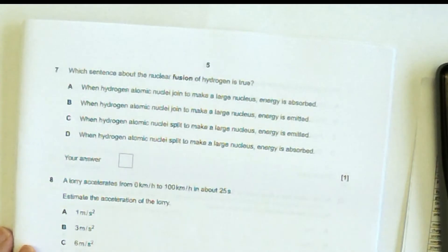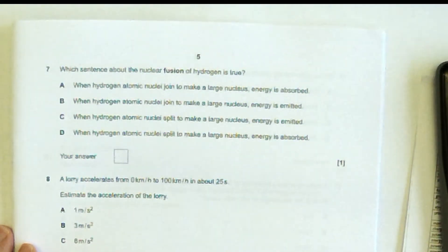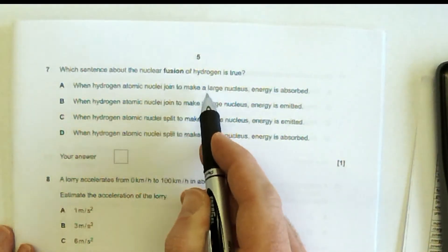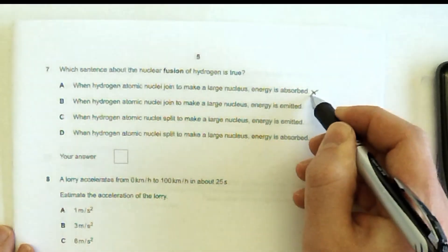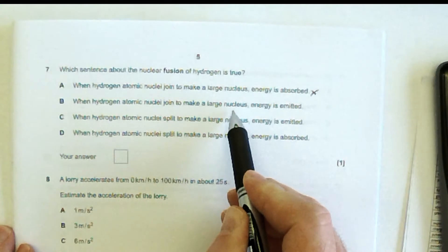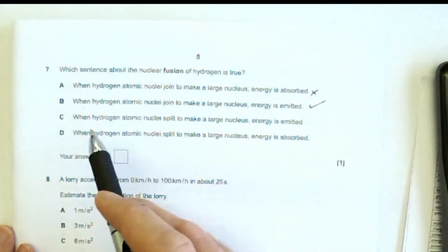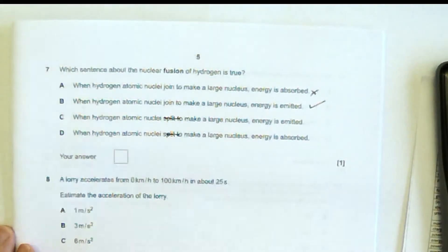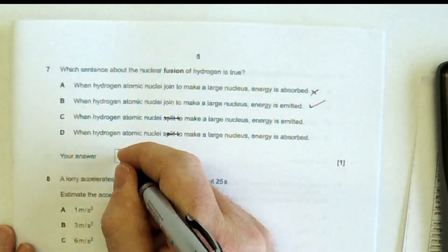Which sentence about the nuclear fusion of hydrogen is true? When hydrogen atomic nuclei join to make a large one, energy is absorbed. No, fusion liberates energy, gives out energy. When hydrogen atomic nuclei join to make a large one, energy is emitted. That seems about right. When hydrogen atoms split, it's not that they split, is it? So it can't be either of these two, so it's got to be B.